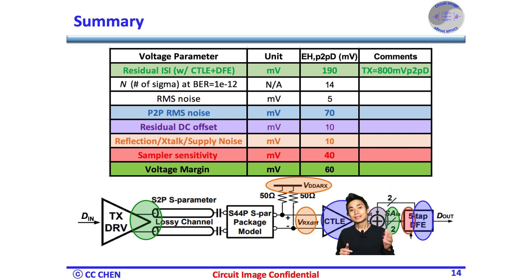Hopefully, this link budget analysis will make you more confident that the whole link can meet the BER equals 1e-12 or BER equals 1e-15 confidently.